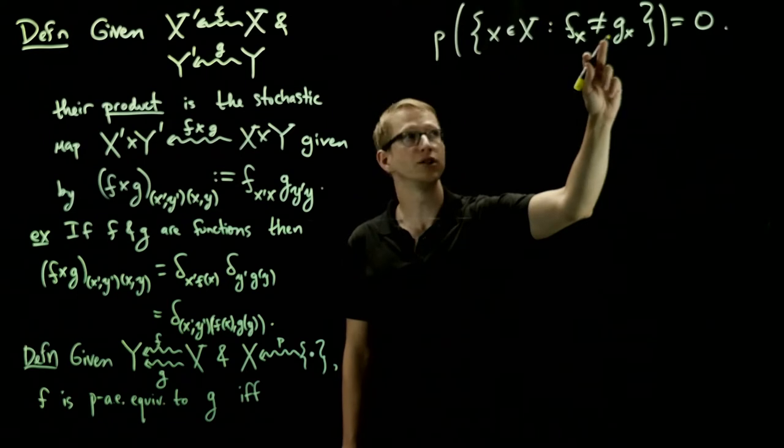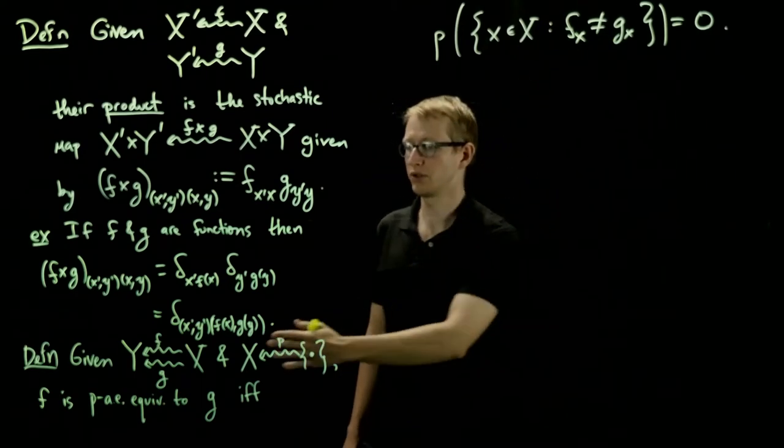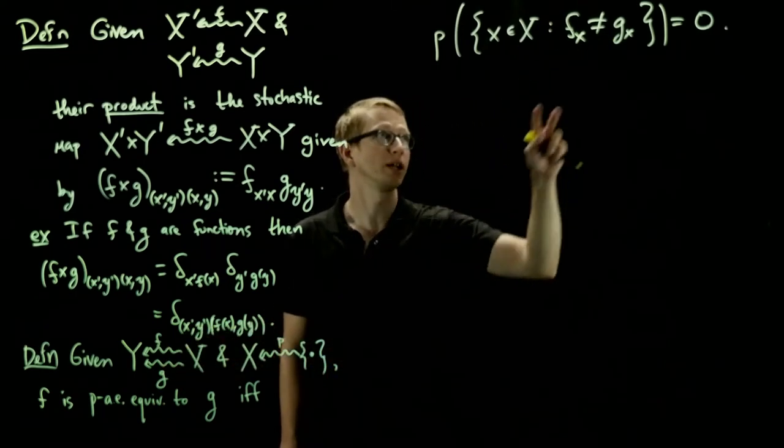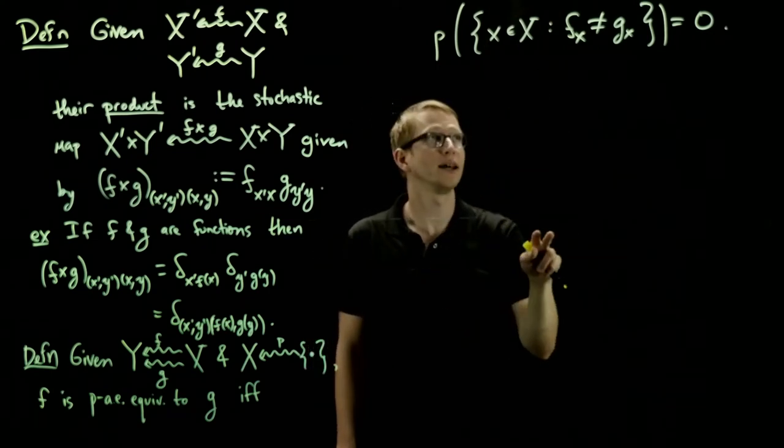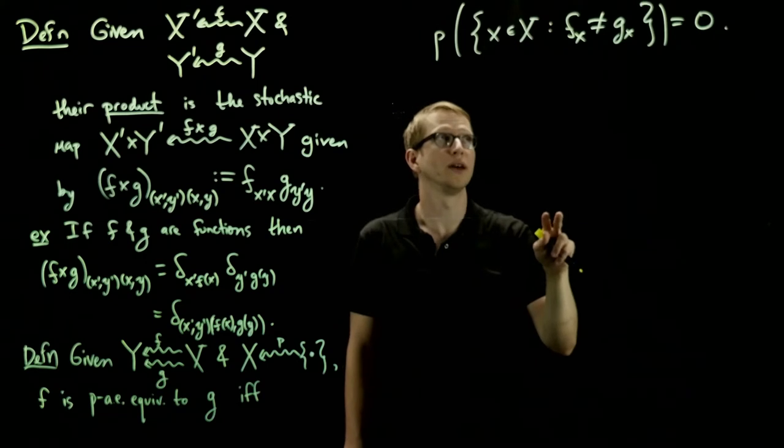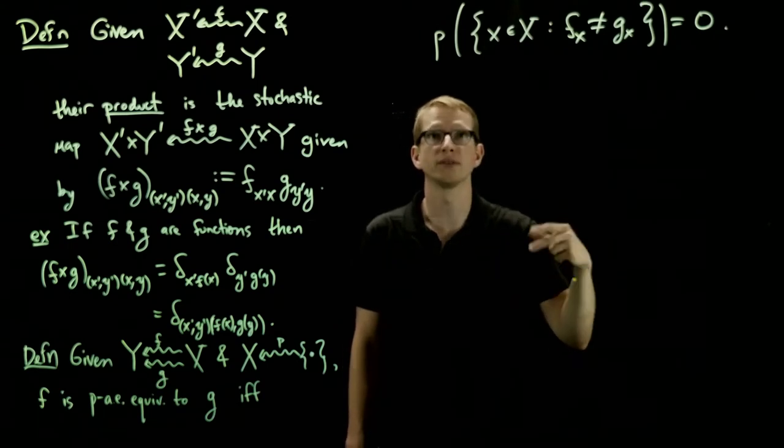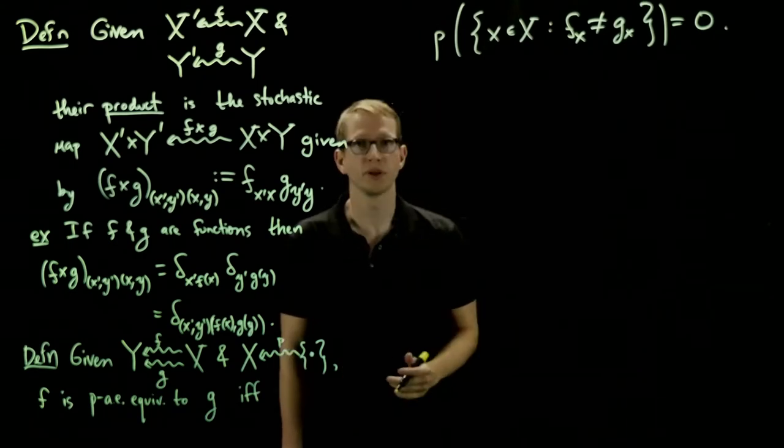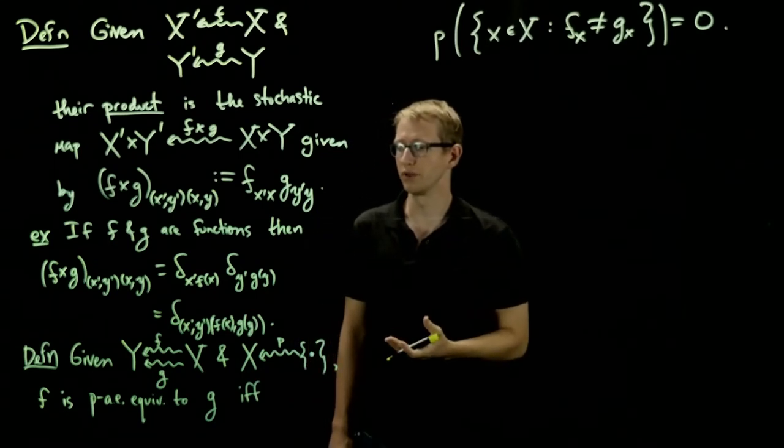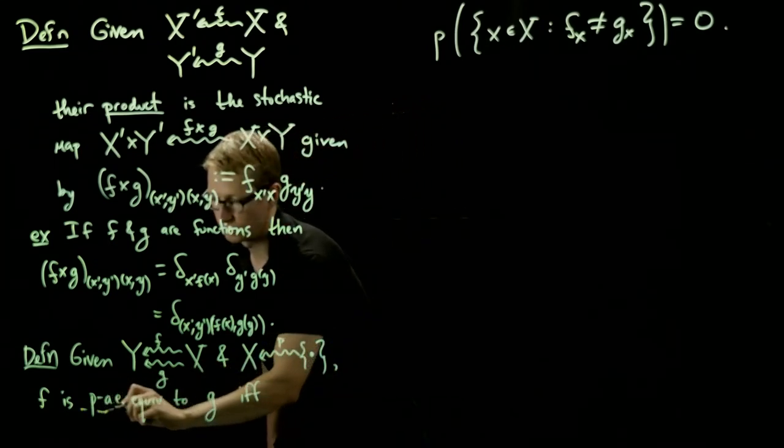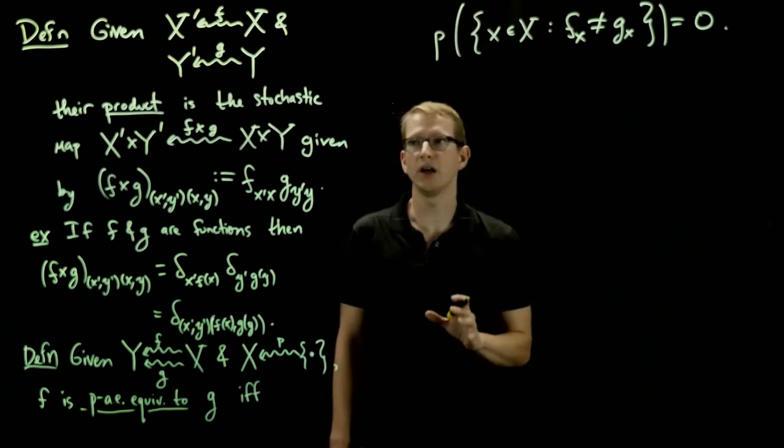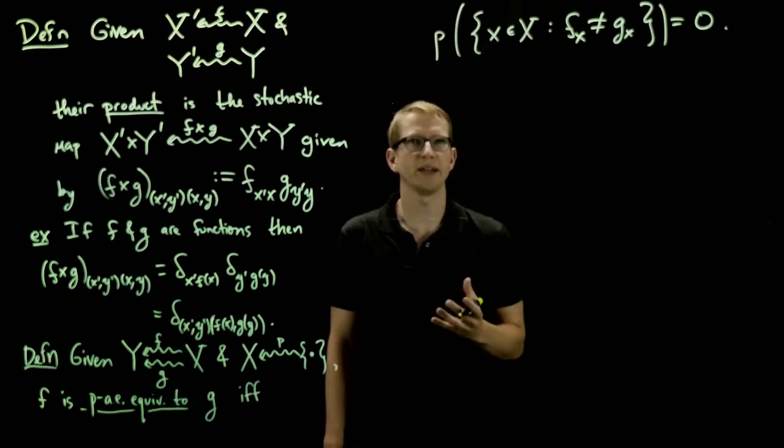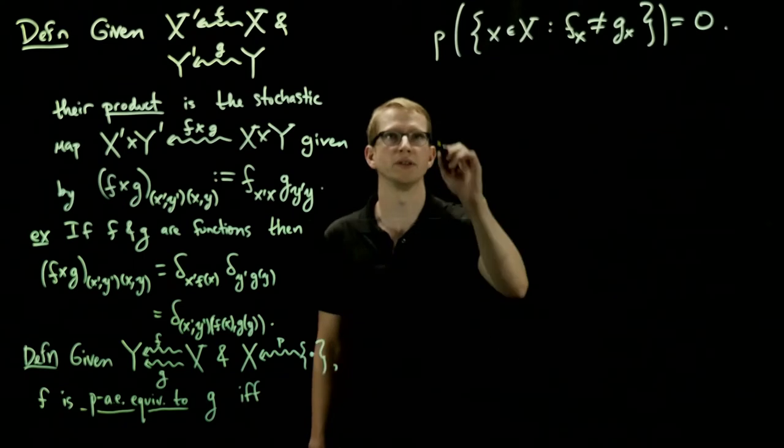Now what does this inequality mean? Now f(x) and g(x) are both probability measures on y. So when I write that they're not equal, that means f_yx is not equal to g_yx for some y. So this is a very intuitive notion of almost everywhere equivalence.